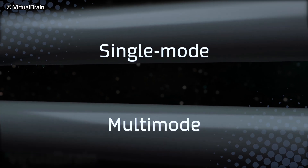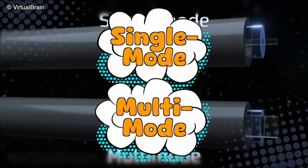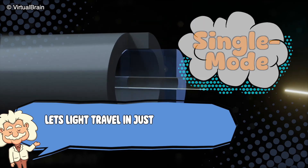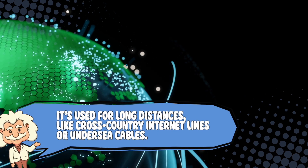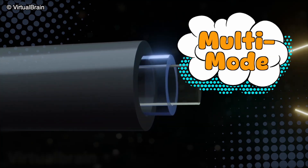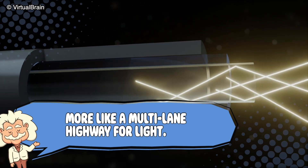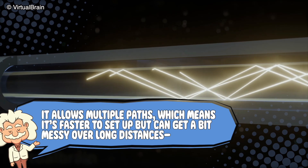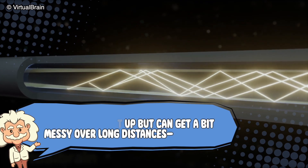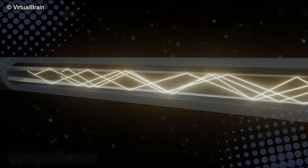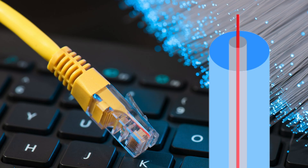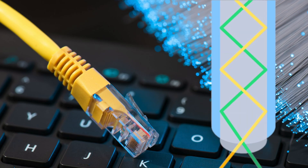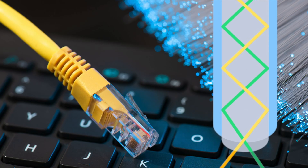Not all fiber optic cables are created equal. There are two main types: single-mode and multi-mode fibers. Single-mode fiber lets light travel in just one straight path, like an express lane for photons — used for long distances like cross-country internet lines or undersea cables. Multi-mode fiber is more like a multi-lane highway for light: it allows multiple paths, which means it's faster to set up but can get a bit messy over long distances, like trying to juggle five laser beams in a hallway. Think of it this way: single-mode is like one super-focused laser marathon runner, while multi-mode is a bunch of glow sticks at a rave — fun, but not ideal for precision.